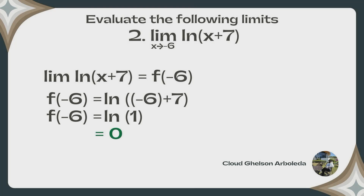Evaluate the following limits. Problem 2: the limit of the natural logarithm of x plus 7 as x approaches negative 6. We substitute negative 6 into x and get the natural logarithm of negative 6 plus 7. Simplifying negative 6 plus 7 gives 1, so f(negative 6) equals the natural logarithm of 1, which equals 0. Therefore, the limit of ln(x+7) as x approaches negative 6 is 0.